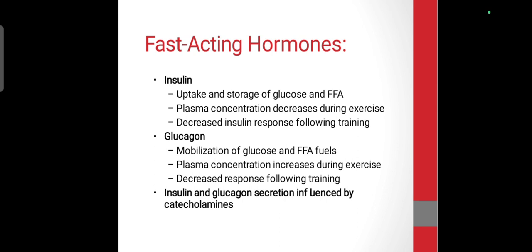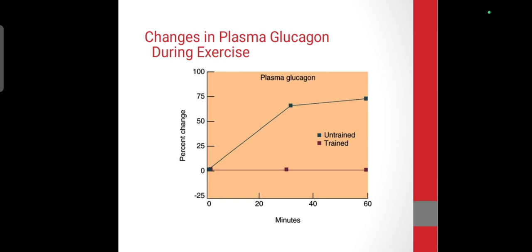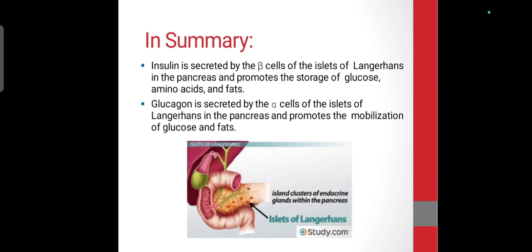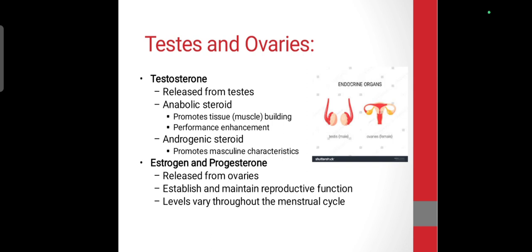During exercise, glucagon promotes glucose and free fatty acid mobilization and helps maintain plasma concentration. Exercise also promotes fat metabolism. Regarding testes and ovaries: testosterone is released from the testes and acts as an anabolic steroid helping in muscle and tissue building. Males have greater muscle size due to testosterone.